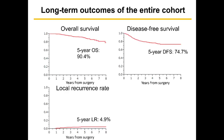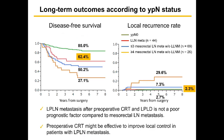The long-term outcomes of the entire cohort were acceptable with a 5-year local recurrence rate of 4.9%. Disease-free survival of patients with lateral lymph node metastasis was slightly better than that of mesorectal N1, and significantly better than mesorectal N2. These results suggest that lateral lymph node metastasis after CRT and LPLD is not a poor prognostic factor compared to mesorectal lymph node metastasis.